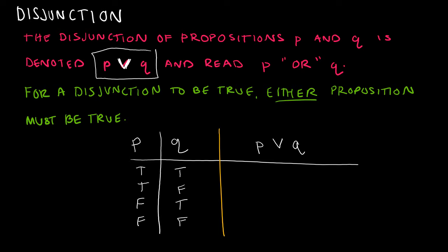I think of a disjunction or the 'or' as being a cup — if either one is true, then the result is true. If P is true and Q is true, then P or Q is true. If P is true but Q is false, P or Q is still true because P was true. If P is false but Q is true, P or Q is still true because Q was true. The only false value is where both P and Q are false, because neither one is true and for the disjunction to be true, either proposition has to be true.